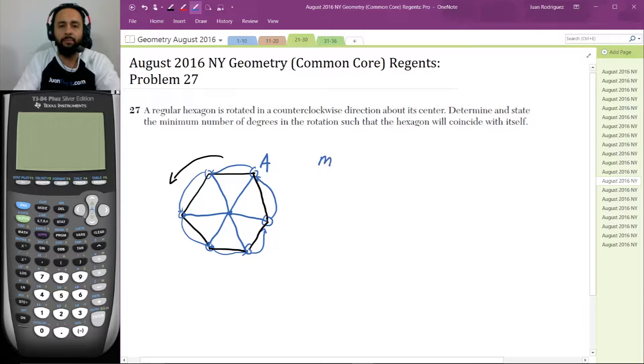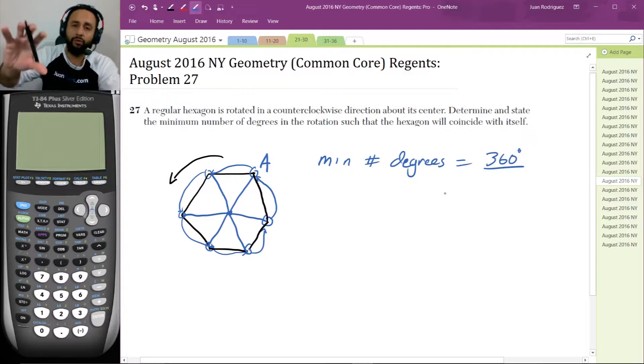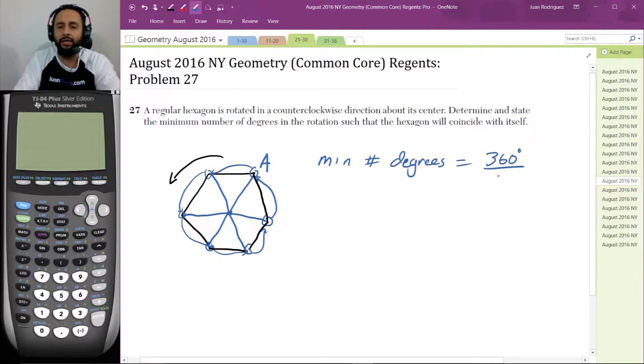So as a result, the minimum number of degrees is 360 degrees divided by, well, if we could rotate it six times to get all the way back to A, then that's 360 divided by six is equal to 60 degrees. And that's a perfectly valid two point solution.